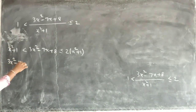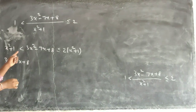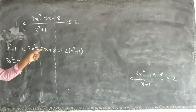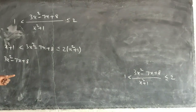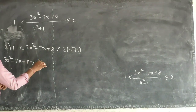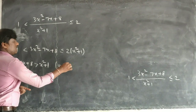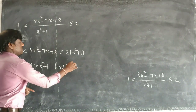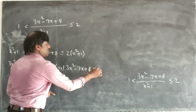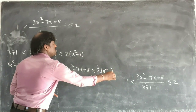So 3x squared minus 7x plus 8 is less than something — and also 3x squared minus 7x plus 8 is greater than x squared plus 1. This is one condition. The second condition is 3x squared minus 7x plus 8 is less than or equal to 2x squared plus 1.